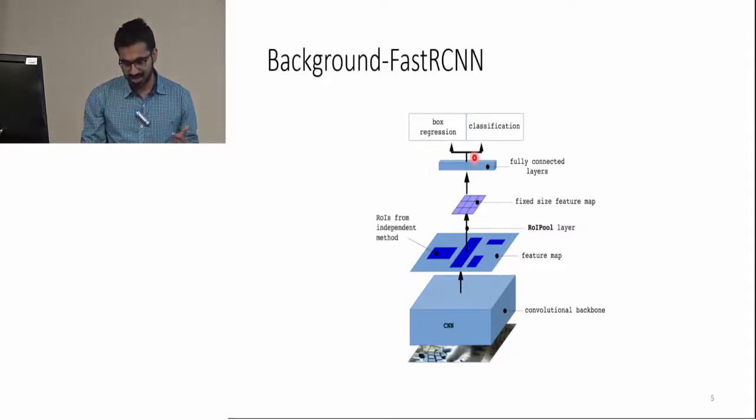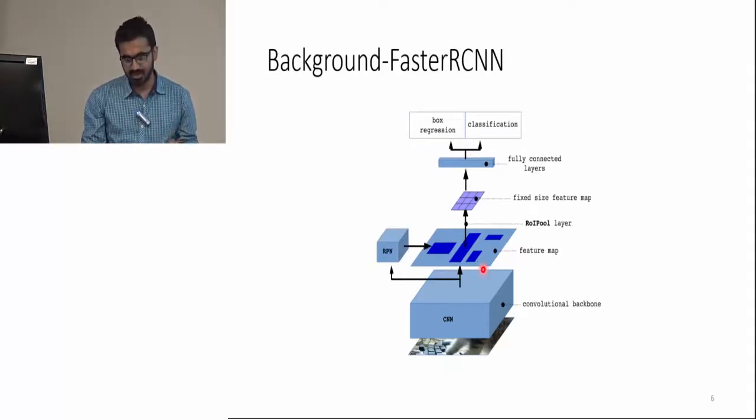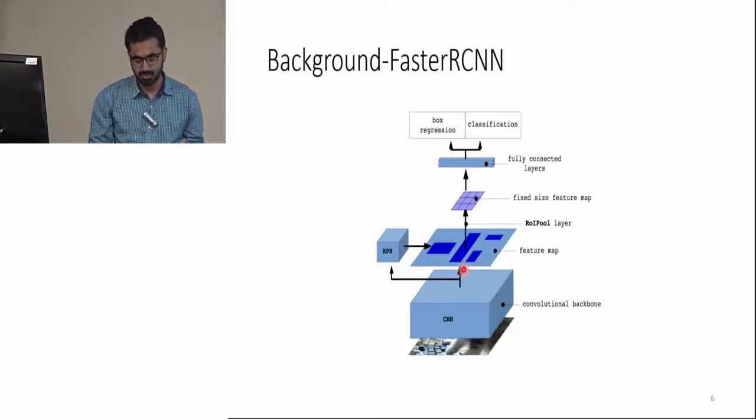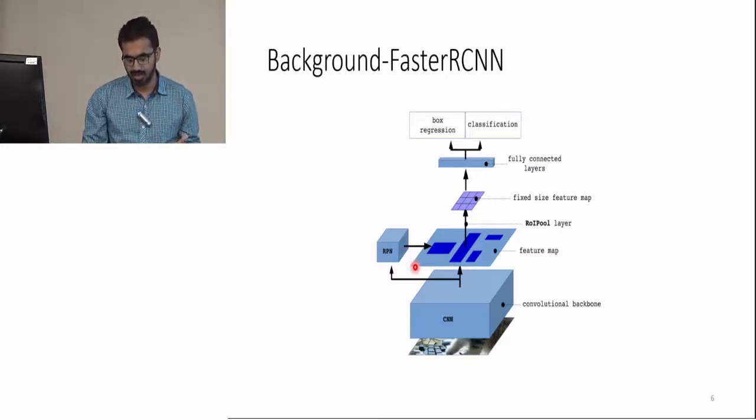Note that at this point, the region proposal is still dependent on a method which is not based on deep learning. Faster R-CNN fills this gap and it proposed a region proposal network. Now there is still one aspect of scene understanding missing here, which is that Faster R-CNN does not do object segmentation.